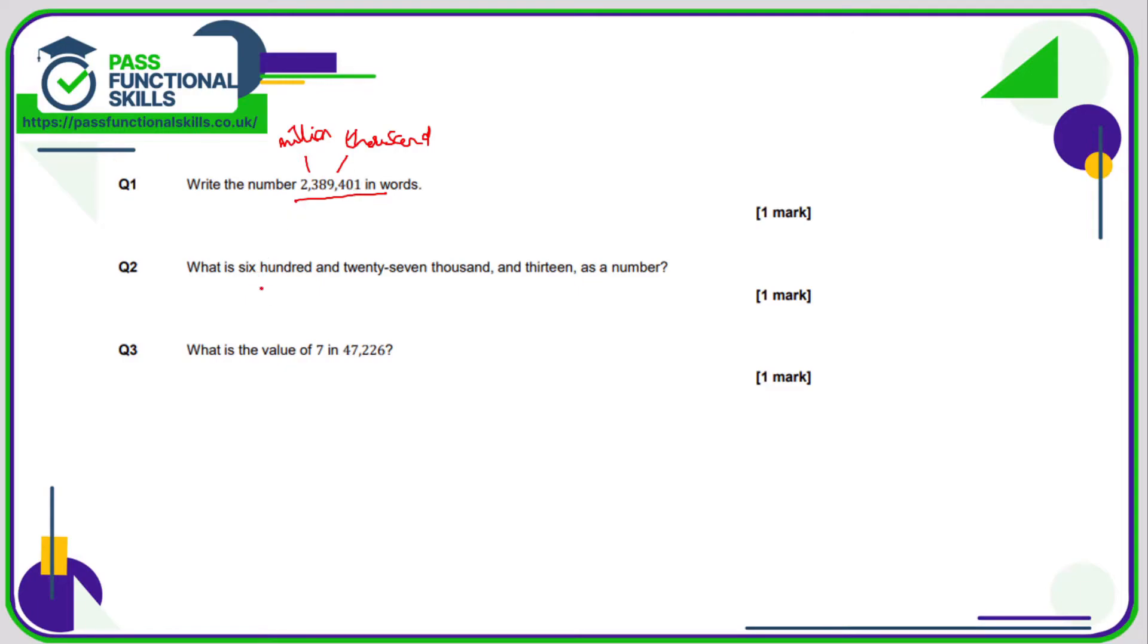So we need to write 627,013 as a number. Remember this word thousand is going to be represented by a comma. So on the left hand side, I'm just going to write 627. And after this, after the comma, I'm going to write the number 13, but I need to write that as 013.